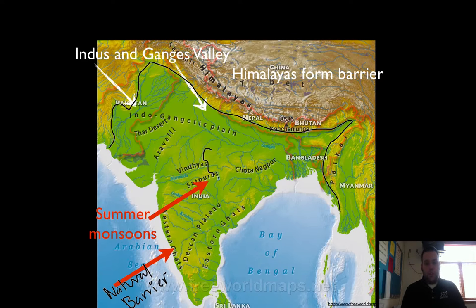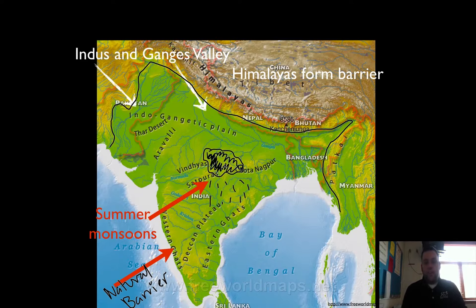Let's draw a little rain cloud here. When these winds are blowing, it's raining like cats and dogs in India. If you've ever been to India or met anybody from India, they will tell you that during the rainy season, it rains a lot.